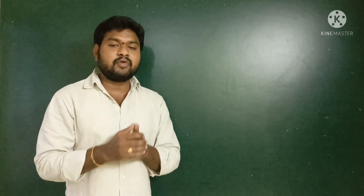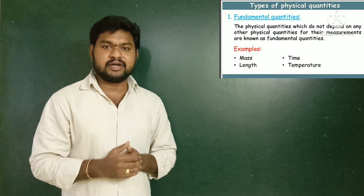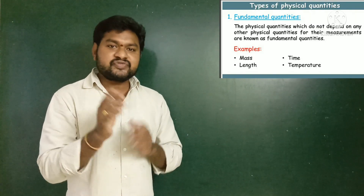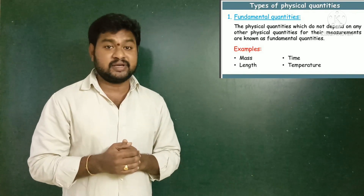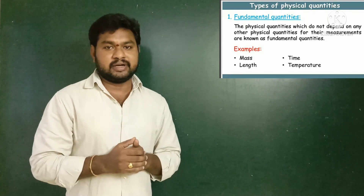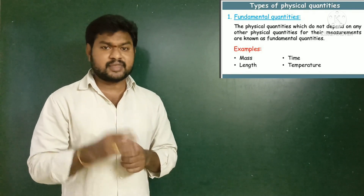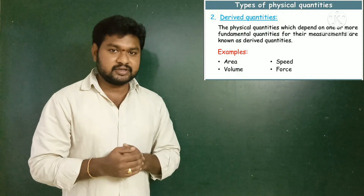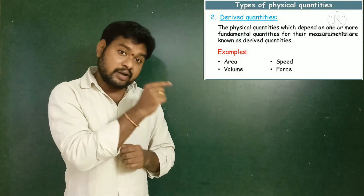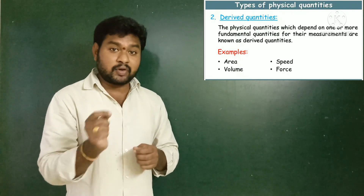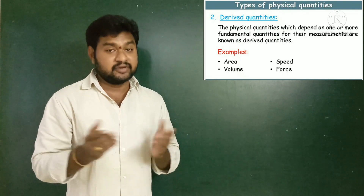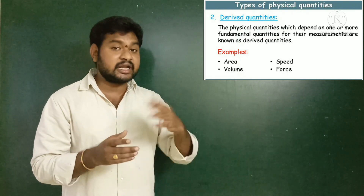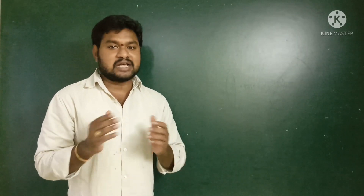These physical quantities can be classified mainly into two types: fundamental quantities and derived quantities. Fundamental quantities are those physical quantities which exist independently — they do not depend on any other quantity. Examples are length, mass, and time. Derived quantities are those quantities which are derived from the fundamental quantities. Examples include speed, area, volume, and density — these are all dependent upon and derived from the fundamental quantities.